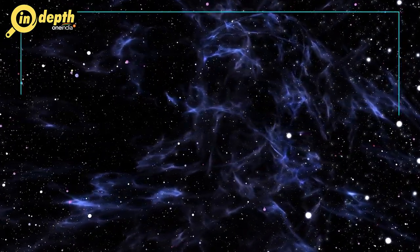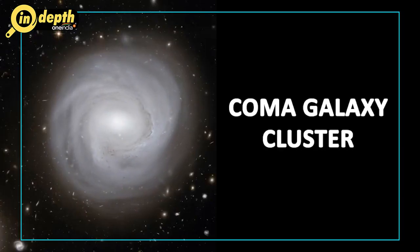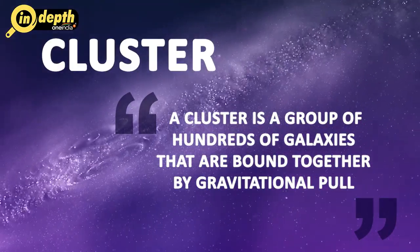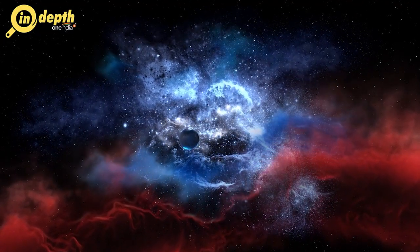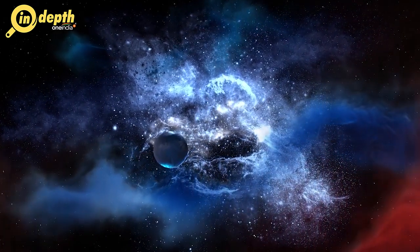The term dark matter was first coined by Swiss astronomer Fritz Zwicky in the 1930s while studying the Coma galaxy cluster, and specifically how fast it revolves. A cluster is a group of hundreds of galaxies bound together by gravitational pull. These clusters are in continuous motion, and the magnitude of their speed depends upon the total mass of all the heavenly bodies inside them. Fritz found that the Coma galaxy cluster moved much faster than expected.